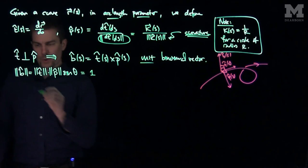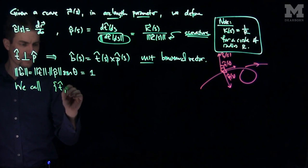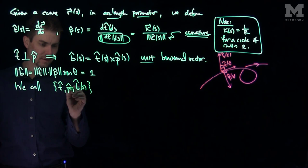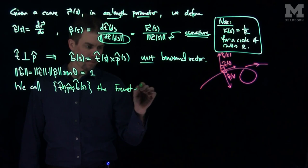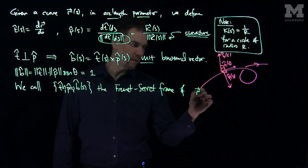Now what we can do is we call t-hat, p-hat, and b-hat, all functions of s, they're all functions of s, the Frenet-Serret frame of the curve r of s.